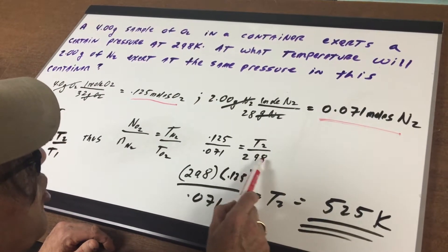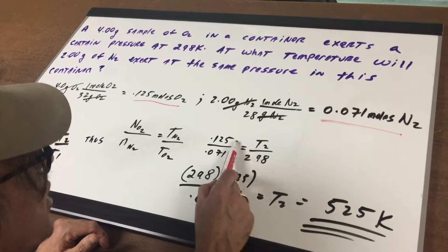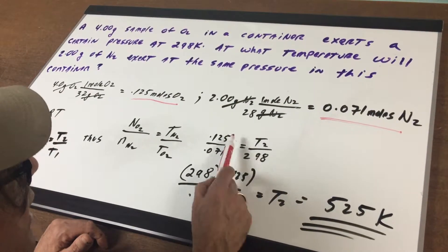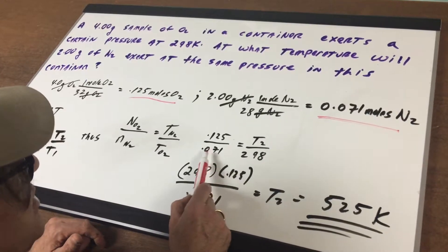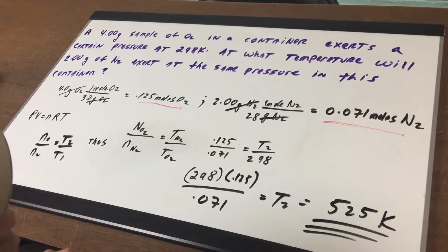And then 298, which is the temperature of oxygen. I cross multiply 298 times 0.125 divided by 0.71, and that gives me my T2, which is 525 Kelvin.